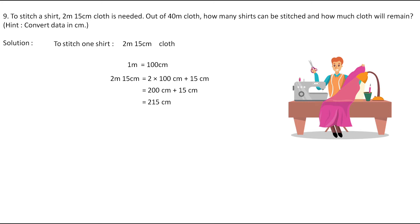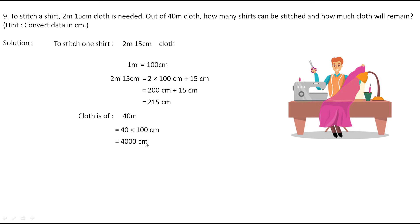One more thing from the question: the cloth available is 40 meters. Let's convert this into centimeters as well: 40 × 100 = 4,000 centimeters. So 40 meters can also be written as 4,000 centimeters. Now we need to find how many shirts can be stitched and how much cloth will remain, so we divide 4,000 by 215.